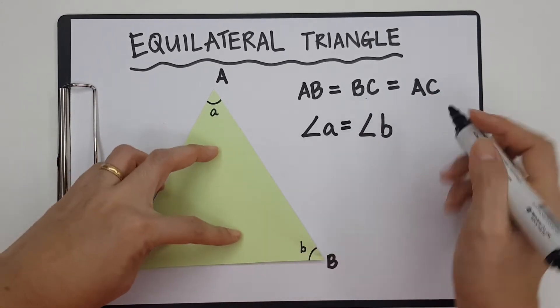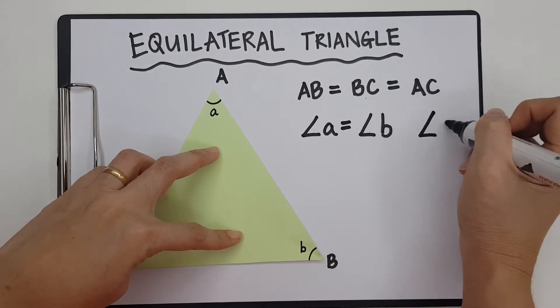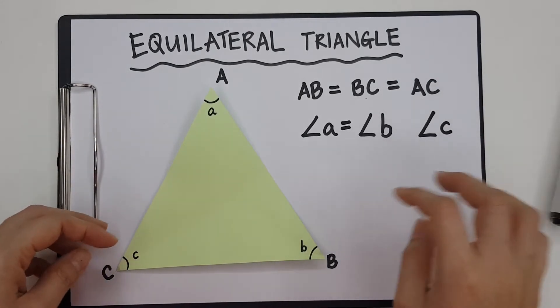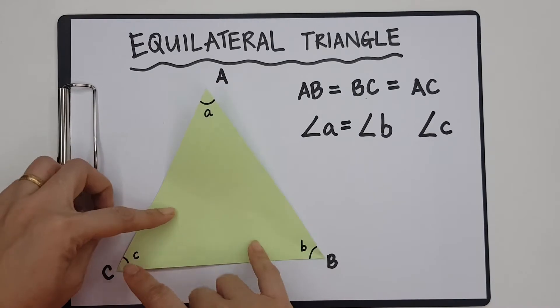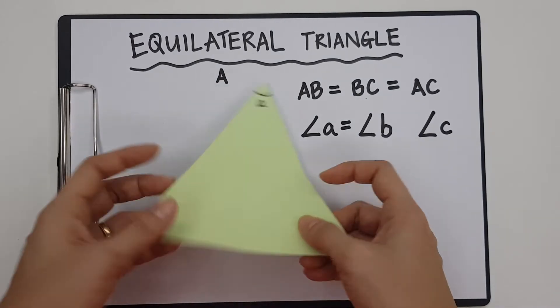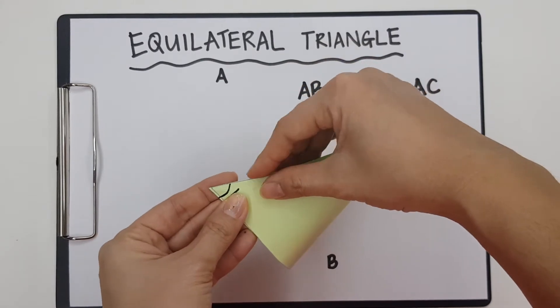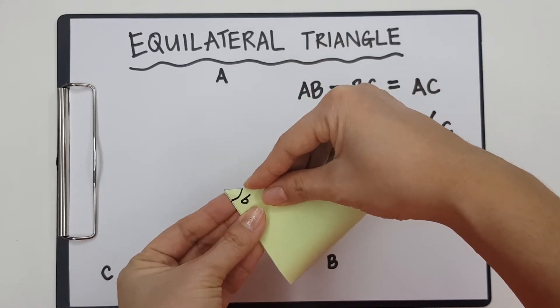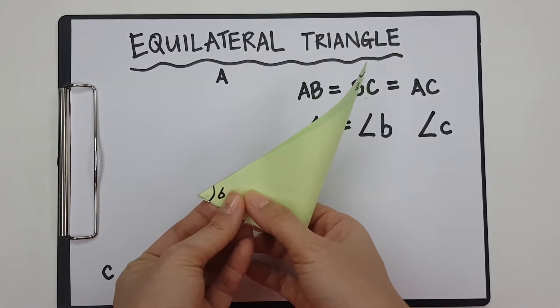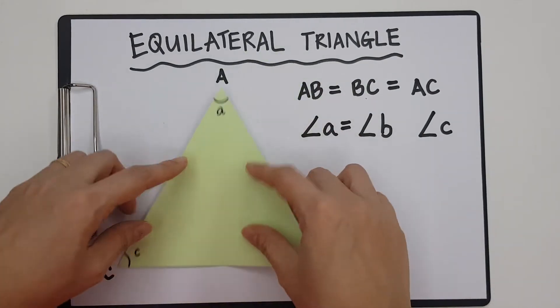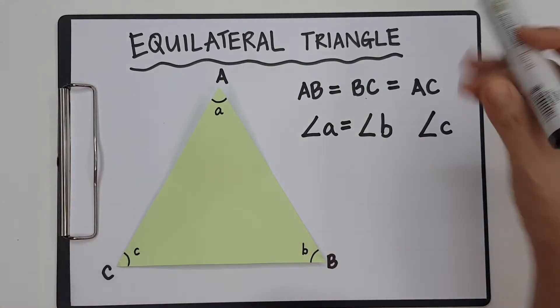Now let's compare B with angle C. I'm going to fold. I'm going to put B and C together. Angle B is also, as you can see, exactly the same as angle C. So I know that B and C are the same.